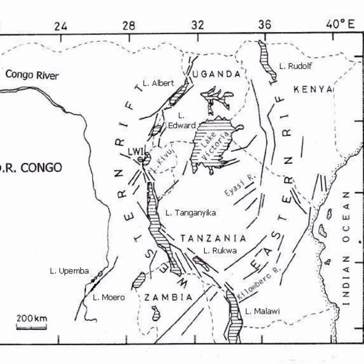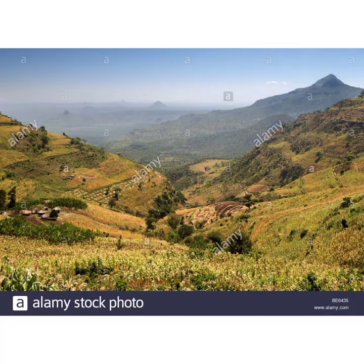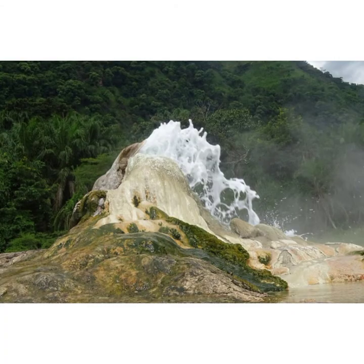The rift valley has different inhabitants which include lions, leopards, elephants, rhinos, buffalos, cheetahs, giraffes, antelopes, zebras, and also primates. In the rift valley there are also other physical features which include lakes, mountains, and also hot springs.